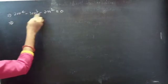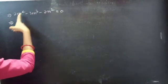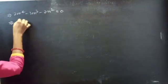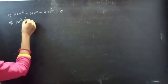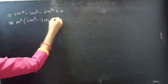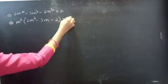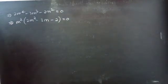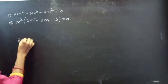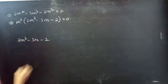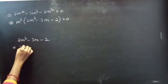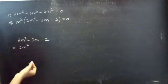You are having m⁴, m³, m² — that is, you are having m² in all three terms. So let's take m² common from all three terms, and you will get m²(2m² - 3m - 2) = 0.